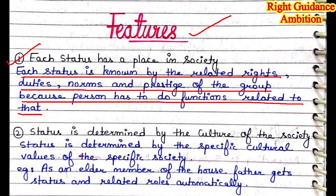The next heading is features. First point: each status has a place in society. Each status is known by the related rights, duties, norms, and prestige of the group, because a person has to perform functions related to that status. In society, whatever the status is, every person has a different place. Any status cannot be removed from society or skipped. With each status, there are some rights, duties, rules, and regulations. Every status has a place in society, and with each status, there are more functions associated with it.